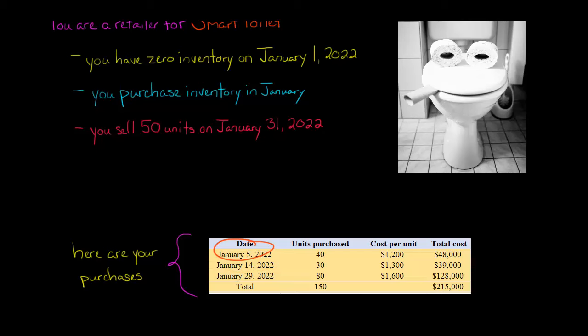Then January 14th, we buy an additional 30 units of the smart toilet at $1,300 a unit. So the price went up, $39,000 we spend.